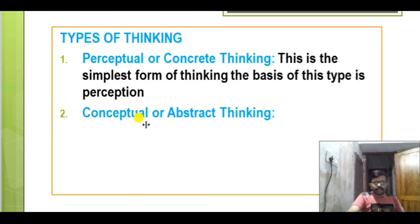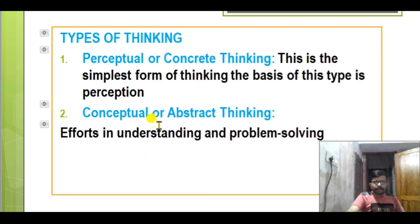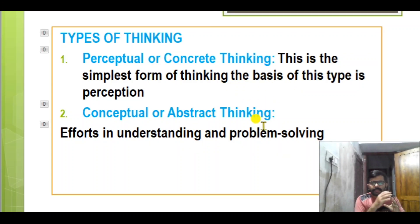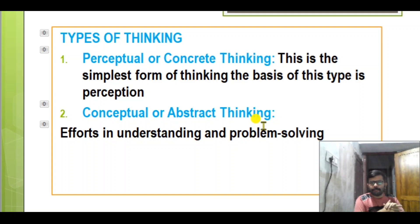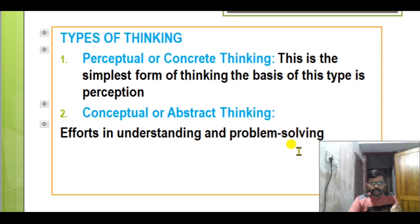The simplest form of thinking is perceptual or concrete thinking. The basis of this type is perception. For example, we live here and I have a class, I have a laptop, I have a car — that is concrete thinking.